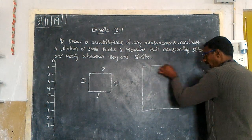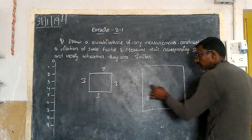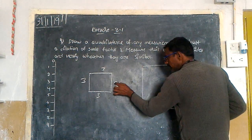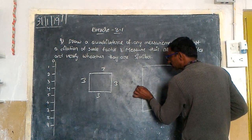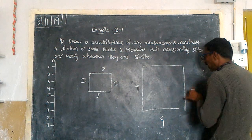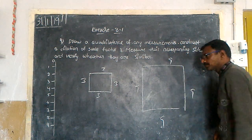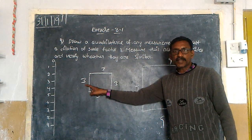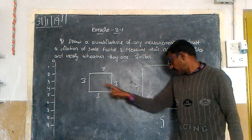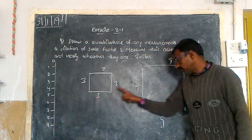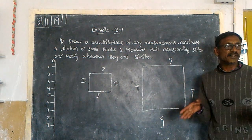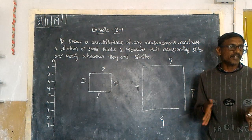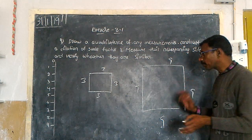We get one more shape like this. Three times how much? Nine, nine, nine, nine. Nine by three equals three. Nine by three equals three. The corresponding sides must be in the same ratio, same proportion.